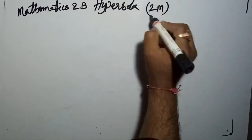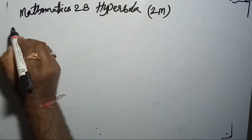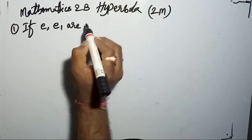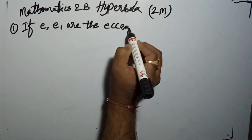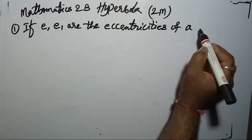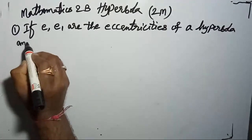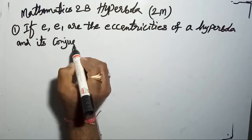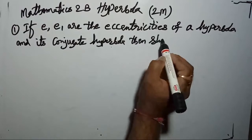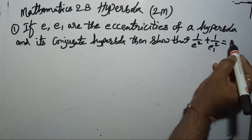The first two-mark related question I want to discuss: If E and E₁ are the eccentricities of a hyperbola and its conjugate hyperbola, then show that 1/E² + 1/E₁² = 1.